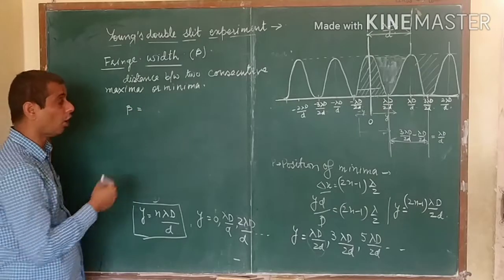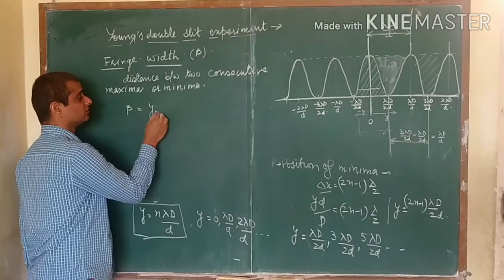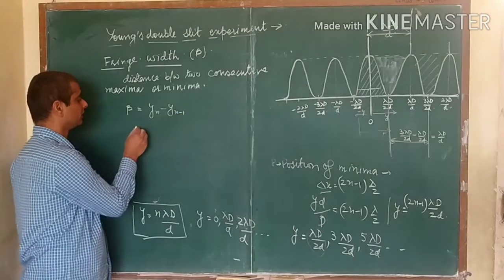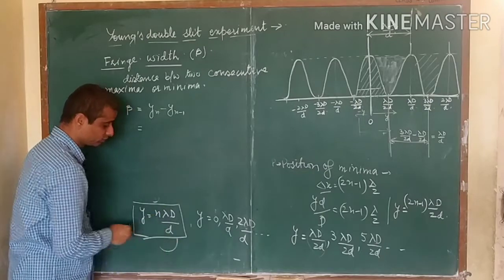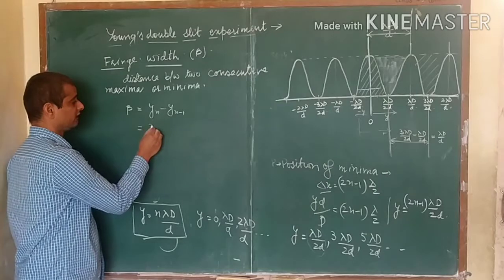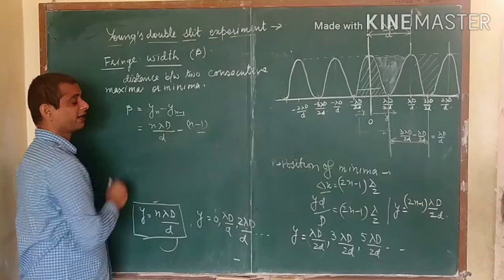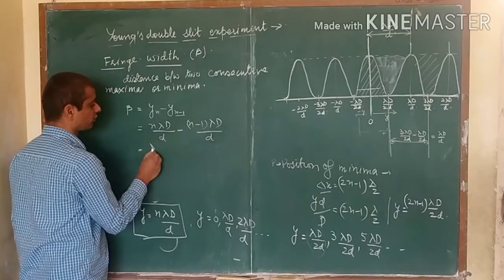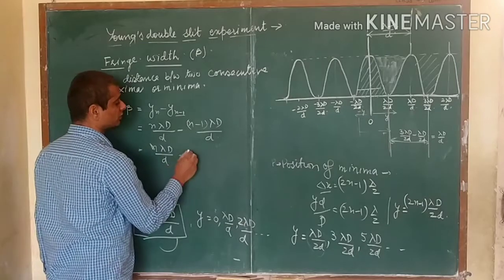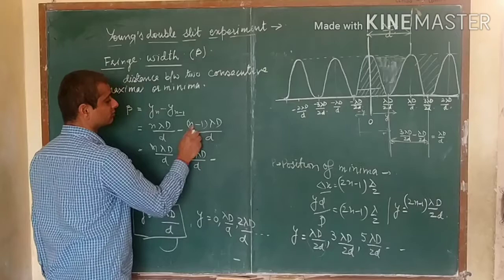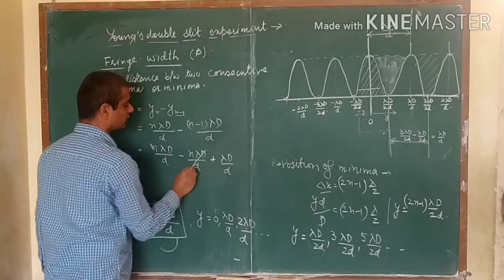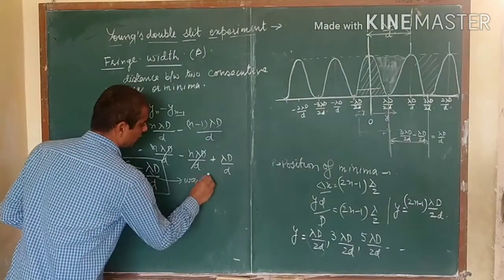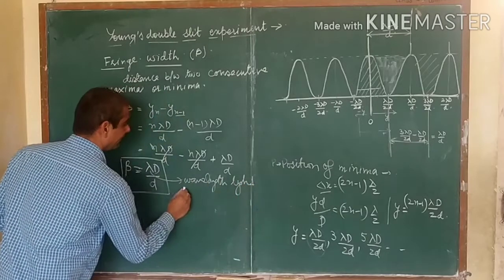Basically, fringe width is the distance between two consecutive maxima or minima. Taking the nth maxima minus the (n−1)th maxima: the position of the nth maximum is nλD/d, and for (n−1) it is (n−1)λD/d. Opening the bracket: nλD/d minus (n−1)λD/d equals nλD/d minus nλD/d plus λD/d. The first two terms cancel, giving β = λD/d — this is your fringe width.